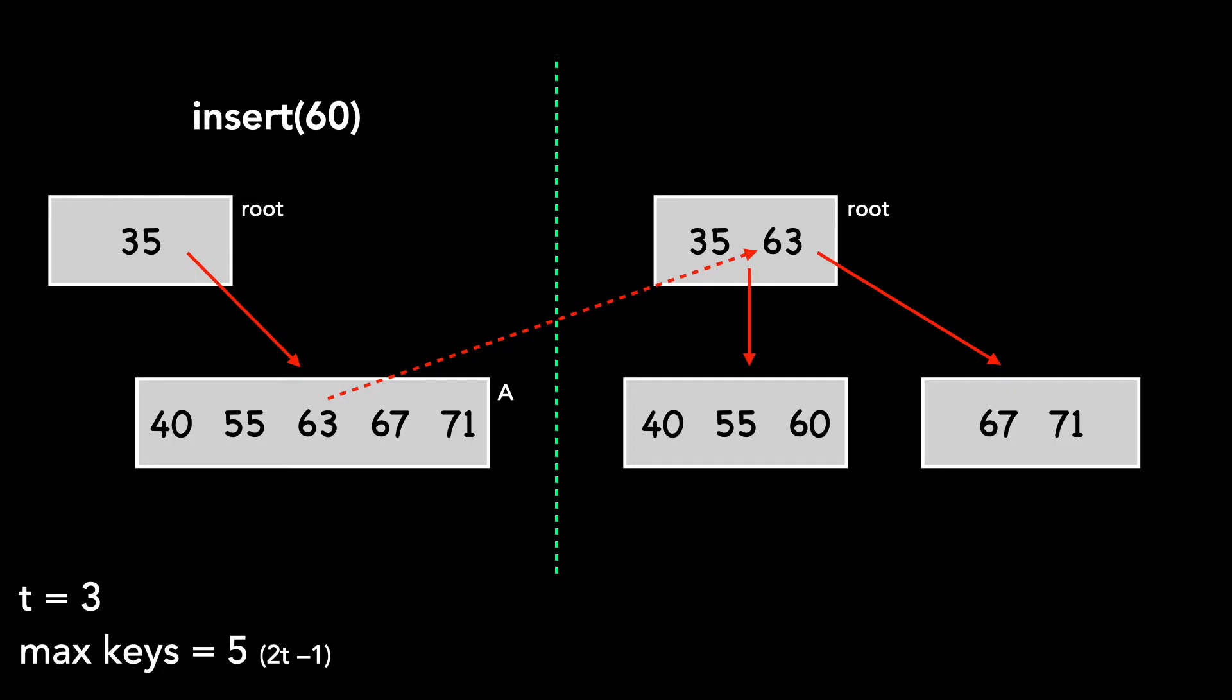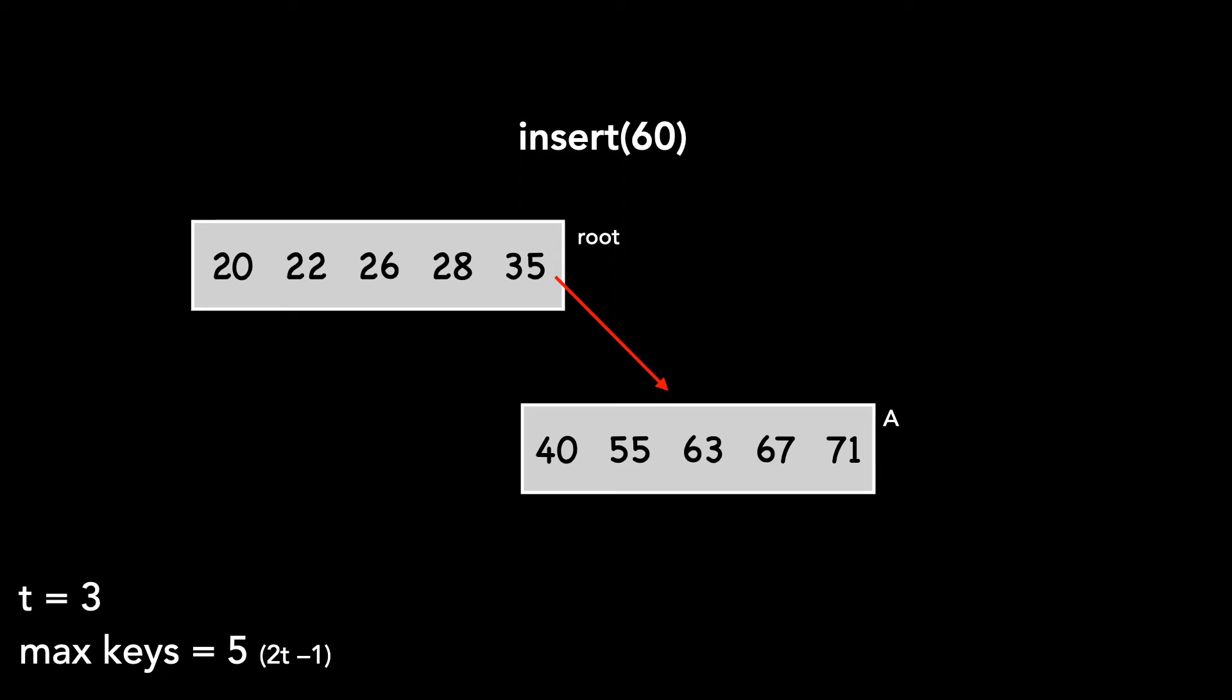However, what happens when the parent is full? In this situation, we wouldn't be able to insert the median into the parent because it already has five keys. To prevent against this, as we travel down the tree, we preemptively split full nodes that we encounter. That way we can insert a key in a single pass.